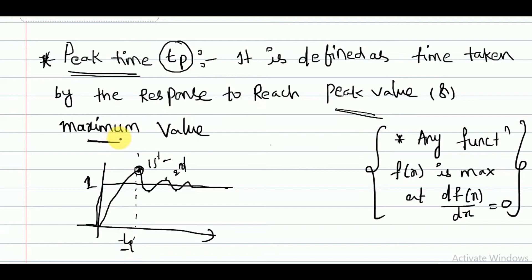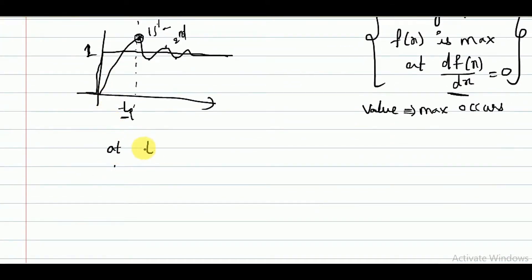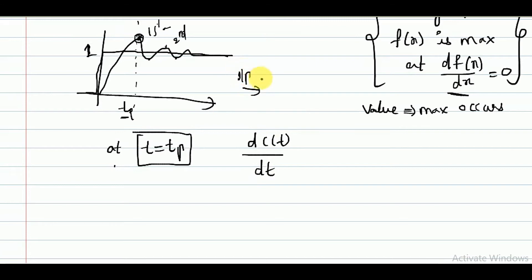From differential equations, any function f(x) is maximum when the differentiation with respect to the independent variable equals zero — that gives the value at which the maximum occurs. So at t equal to t_peak, the derivative of the response dc(t)/dt equals zero. The input is a unit step applied to the second order system, giving c(t) as the response. Equating dc(t_p)/dt = 0 gives the precise definition of peak time.